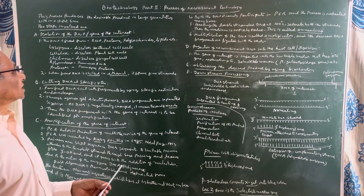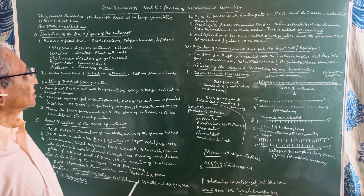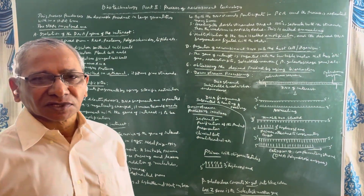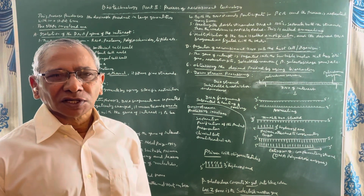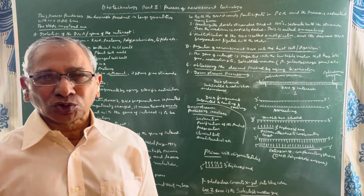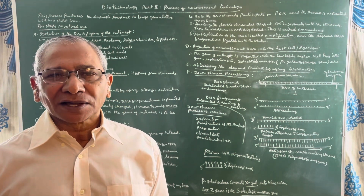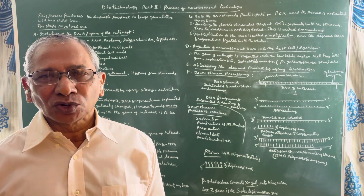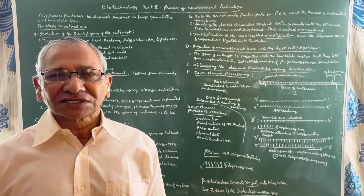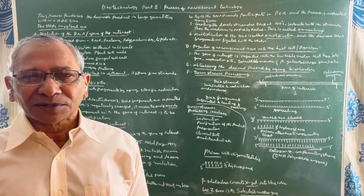Today I am dealing with part 2 of biotechnology, that is the process of recombinant DNA technology. I already have told you recombinant DNA technology helped in producing human insulin by Eli Lilly company. That company is marketing human insulin in the form of Humulin for so many years, and it is helping millions of diabetic patients.